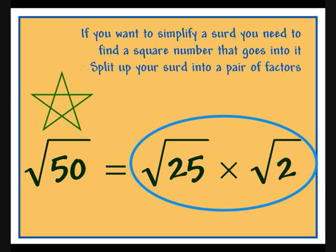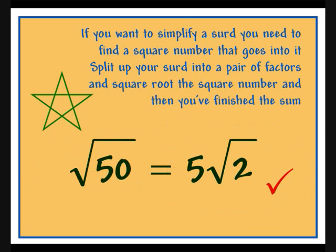Split up your surd into a pair of factors and square root the square number, and then you've finished the sum.